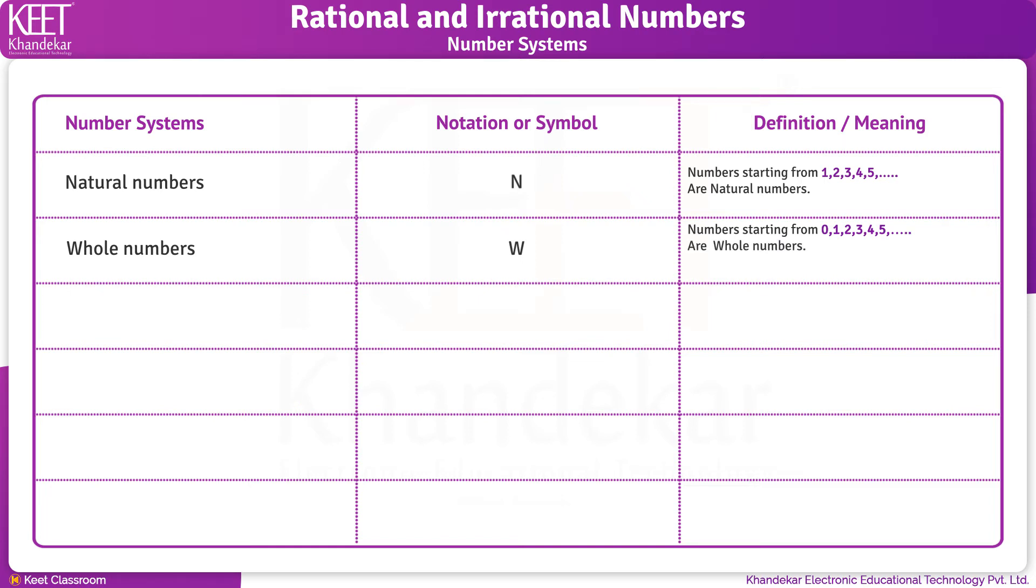That is, whole numbers includes natural numbers. So we can write W equals 0 plus N.